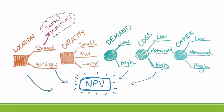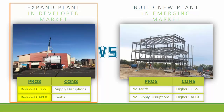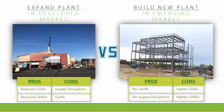Before I start totaling sales, recall that there are variables that will affect one decision alternative differently than the other. If we expanded and developed, we will have the benefit of lower COGS and CAPEX, but we could suffer supply disruptions and tariffs may be levied on widgets sold to the emerging market. On the other hand, if we build new and emerging, we don't need to worry about tariffs or supply disruptions, but COGS and CAPEX will be higher. I'd prefer to satisfy demand within the developed market completely before selling to the emerging market.